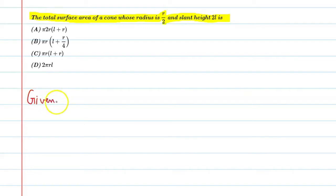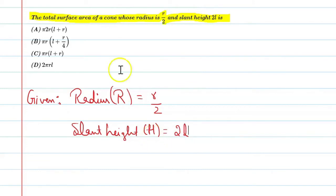Let's write it. Radius r, it is equal to r by 2. Okay, radius of cone given. Slant height given, represented by capital L which is equal to 2l. So this is capital L. Let's write its solution.